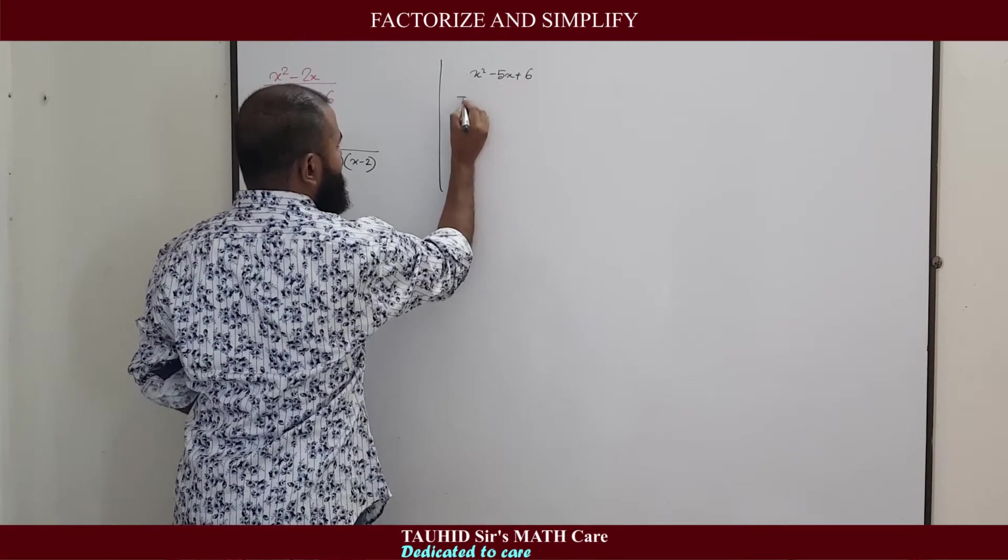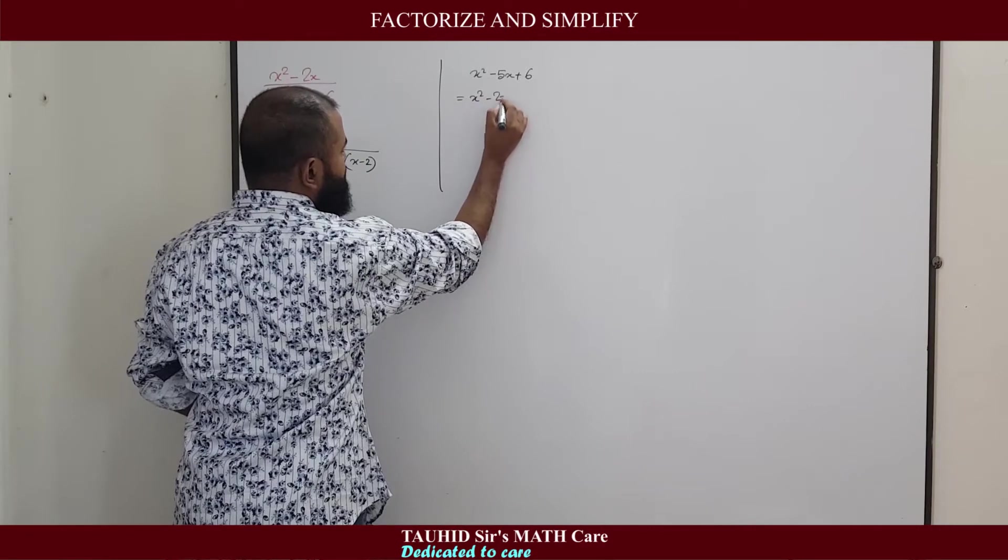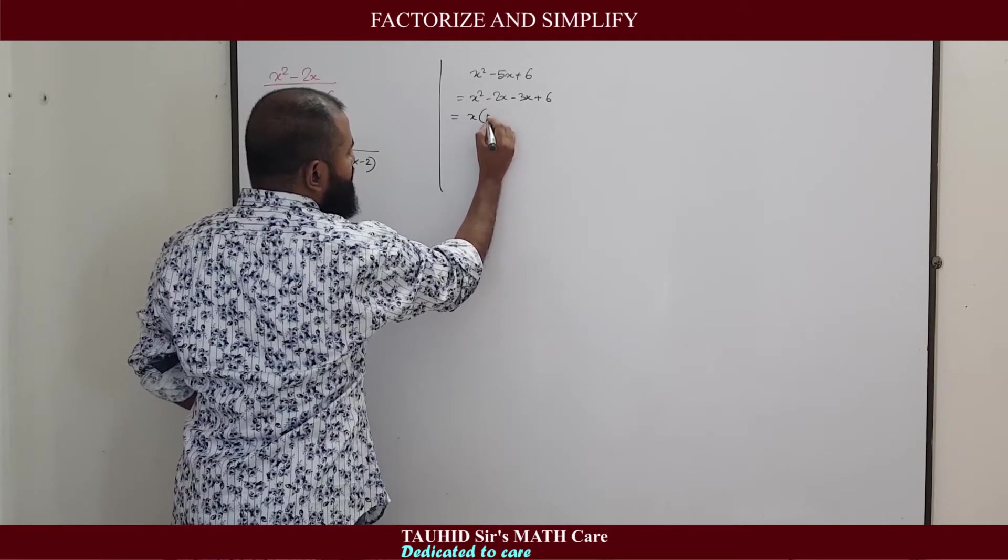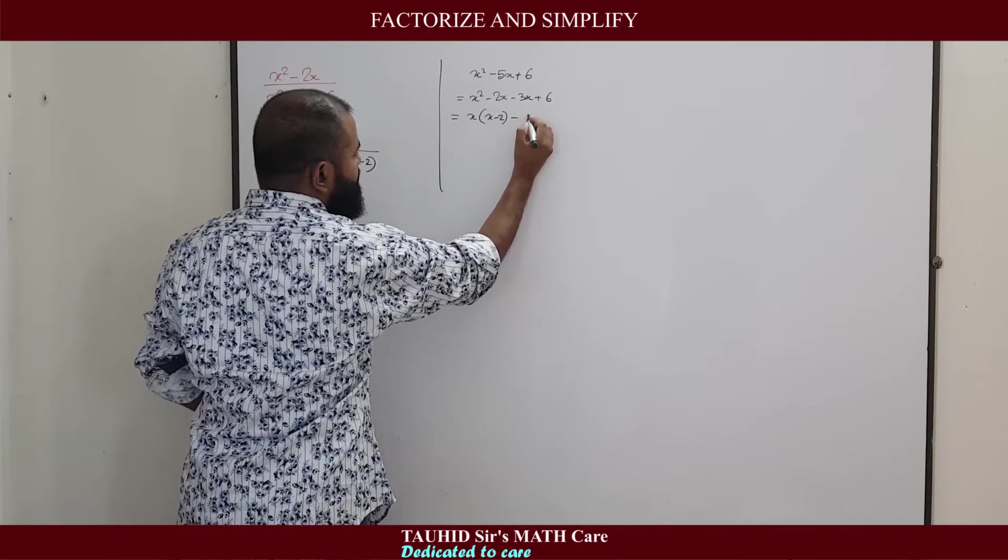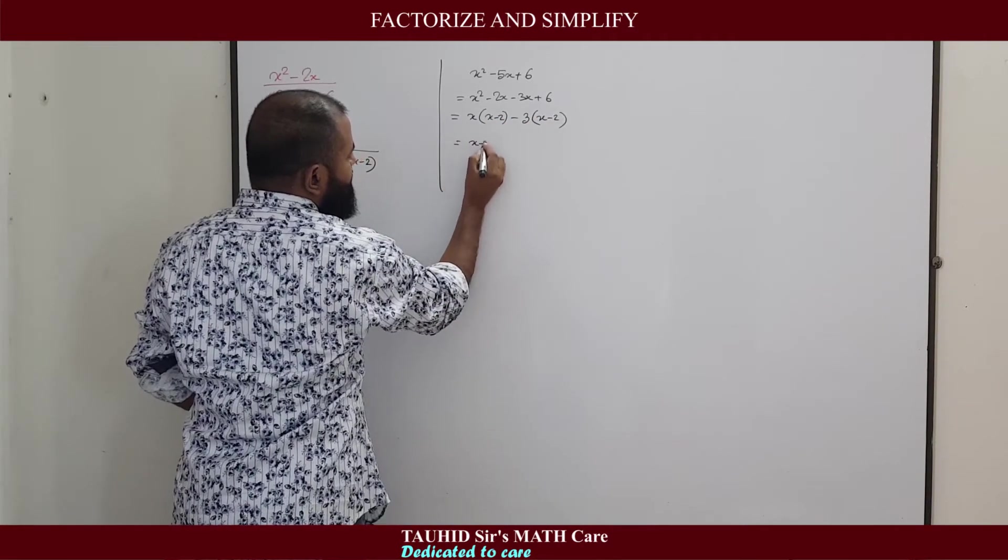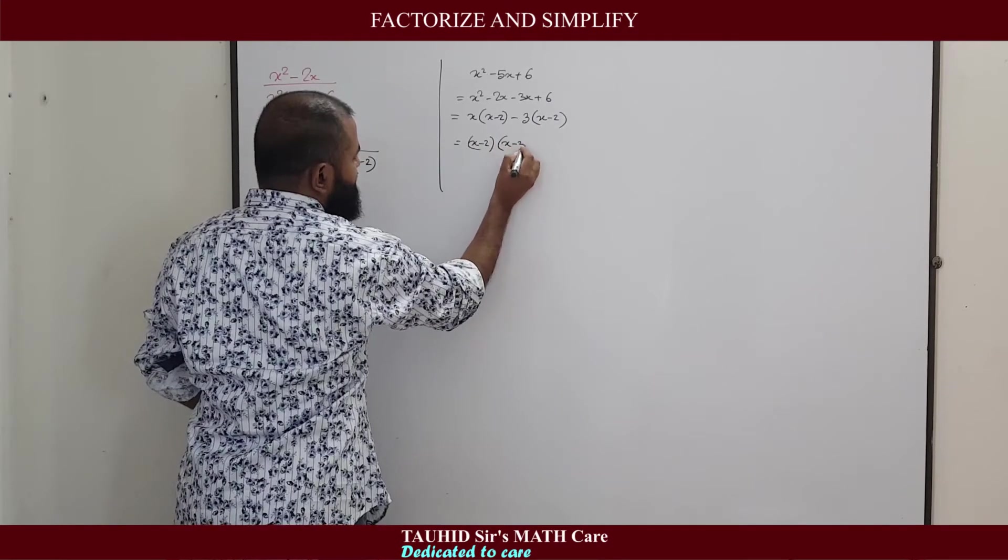plus 6 equals x² - 2x - 3x + 6. We take x common here: x(x - 2). Minus, we take 3 common here: -3(x - 2). So (x - 2)(x - 3).